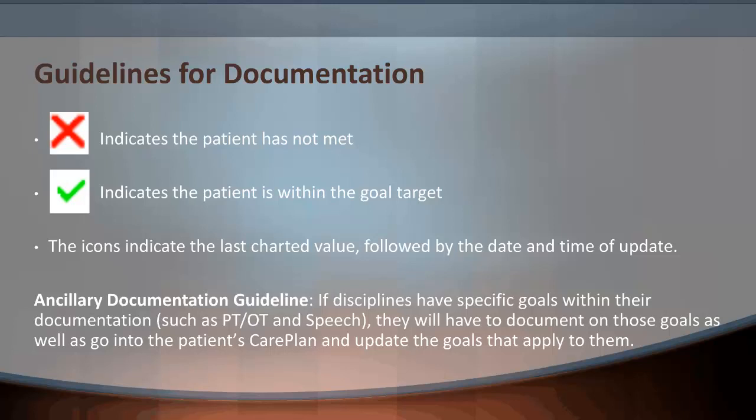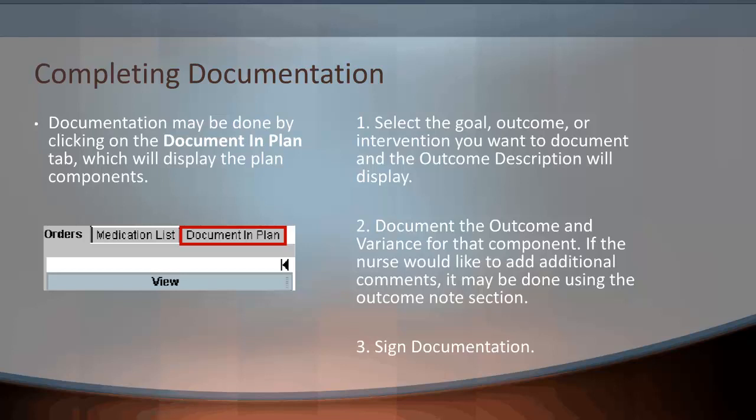Ancillary documentation guideline: if disciplines have specific goals within their documentation, such as PT, OT, and speech therapy, they will have to document on those goals as well, going into the patient's care plan and updating the goals that apply to them. To complete documentation, click on the Document and Plan tab, which will display the plan components. Number one: select the goal, outcome, or intervention you want to document on, and the outcome description will display. Number two: document the outcome and variance for that component. If you would like to add additional comments, use the outcome notes section. Number three: sign the documentation.